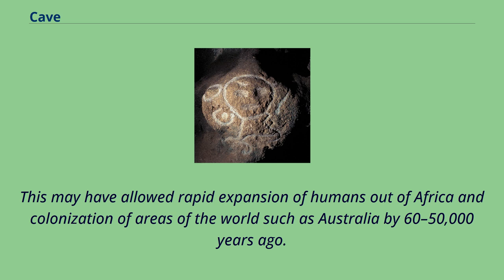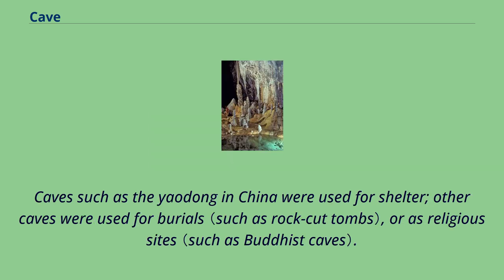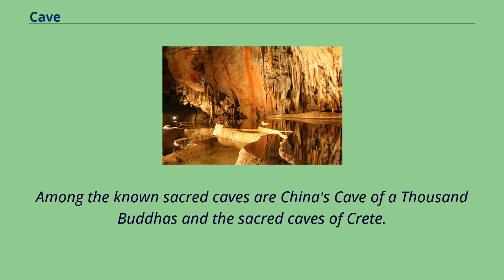Throughout southern Africa, Australia, and Europe, early modern humans used caves and rock shelters as sites for rock art, such as those at Giant's Castle. Caves such as the Yadong in China were used for shelter; other caves were used for burials or as religious sites. Among the known sacred caves are China's Cave of a Thousand Buddhas and the Sacred Caves of Crete.